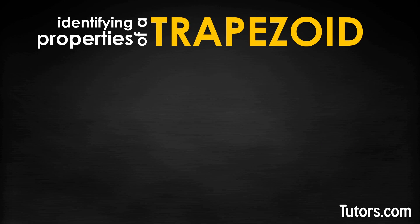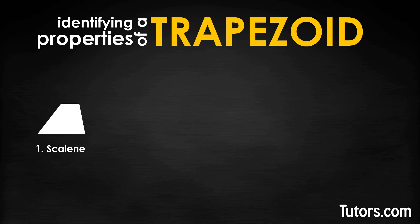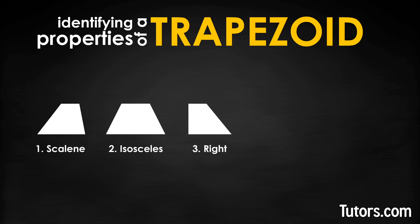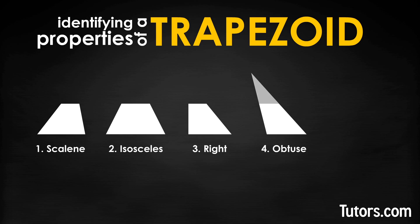Since trapezoids can begin life as triangles, they share names derived from the kinds of triangles. First, we have a scalene trapezoid, which started out as a scalene triangle. Second, we have an isosceles trapezoid, which began as an isosceles triangle. Next, we have a right trapezoid, which once was a right triangle. Fourth, we have an obtuse trapezoid, which is like an obtuse triangle. And last, we have an acute trapezoid, which is like an acute triangle.